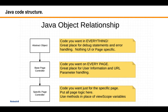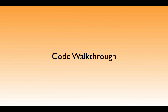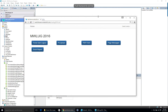Then I create a base page controller — code you want on every page. Here you can get into the UI, grab the current user, and so on. You always grab the current user, grab URL parameters, or have methods to get those. Then finally you extend that: BasePageController extends AbstractObject, and the specific page controller extends BasePageController. It's almost like a cascading stylesheet. The specific page controller is where you put code for a specific page — all the page logic. No more view-scope variables because you can turn them into getters, setters, and methods.